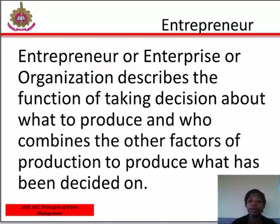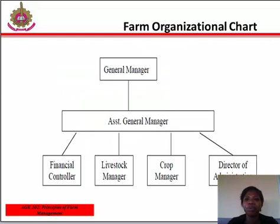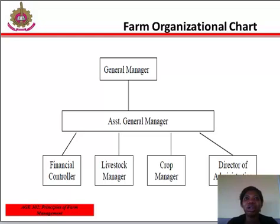Agricultural businesses are made up of people working together towards a common goal or purpose. As soon as the agribusiness involves more than one person, a variety of organizational, personnel, leadership, and motivational issues inevitably arise. The larger the organization, the more complex and critical the issues become. The typical firm organizational structure provides a cordial relationship between firm management and firm workers.